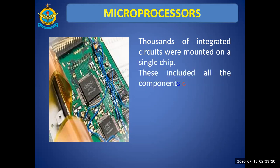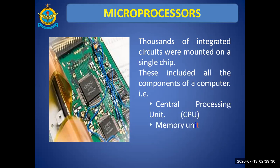The microprocessor included all the components of a computer: the central processing unit or CPU, its memory unit, storage, and all input and output controls. All of these were mounted on that single microprocessor chip, also known as the IC chip.